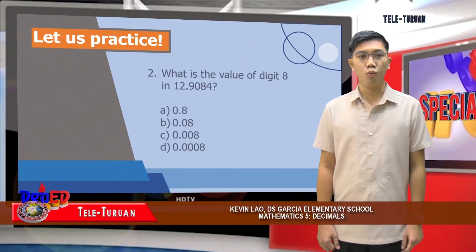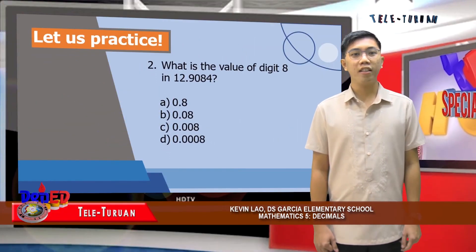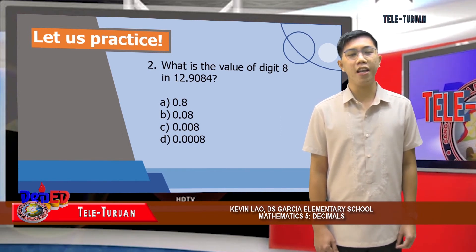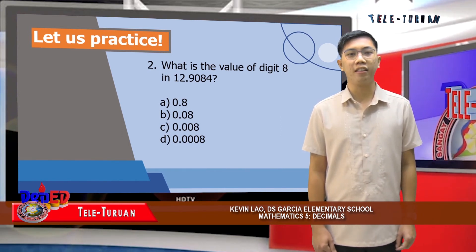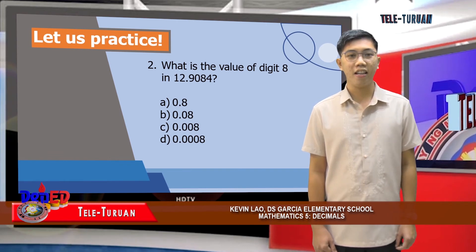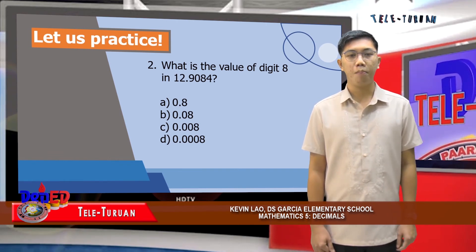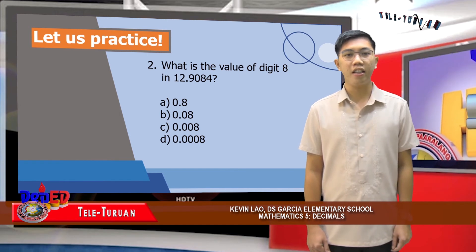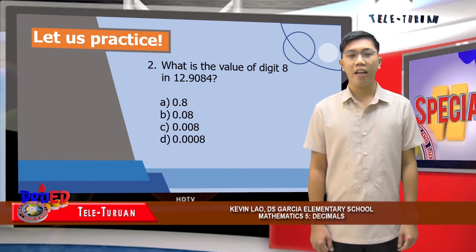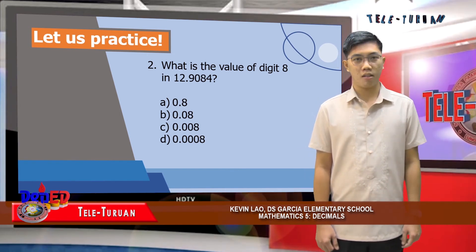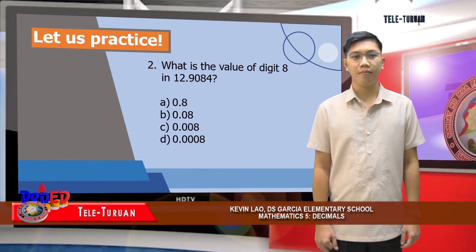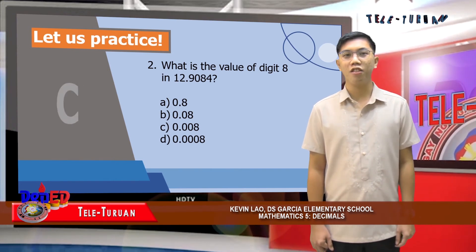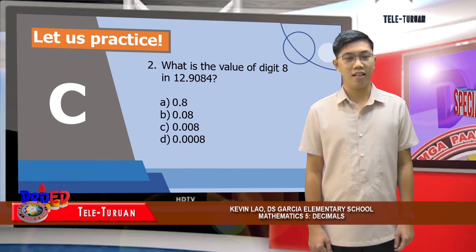For number two: what is the value of digit 8 in 12 and 9,084 ten-thousandths? The choices are A, eight-tenths; B, eight-hundredths; C, eight-thousandths; or D, eight-ten-thousandths. The correct answer is C, eight-thousandths.